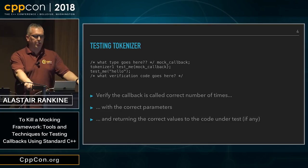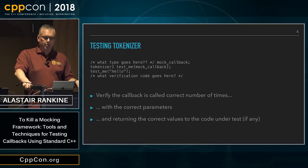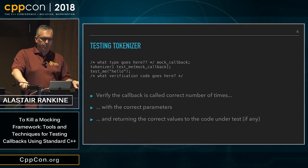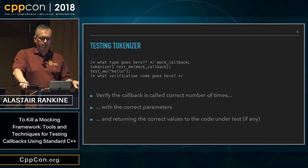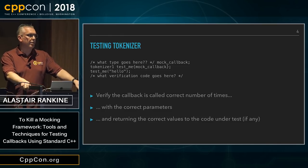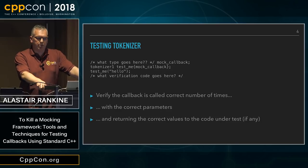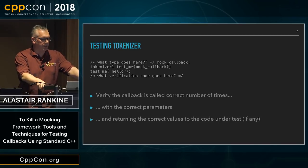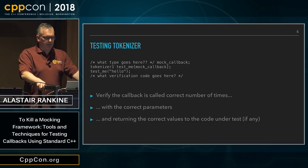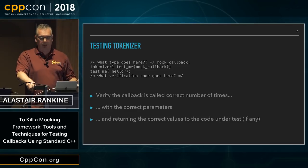So how do we write a test case? We can construct a test suite which provides various inputs to the code under test and checks the results. But how do we check that the callback is called in the right way, or even at all? And if the callback needs to return values to the caller, how do we provide them? The most common solution is to use a mock, which is a test-only component that implements the callback interface to enable verification of the calling code.